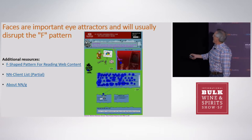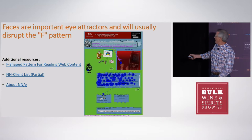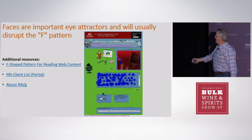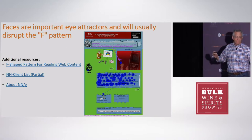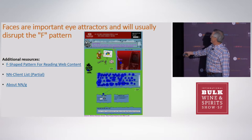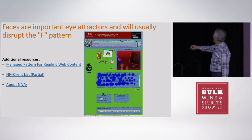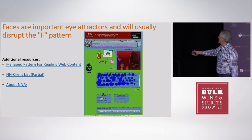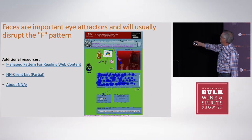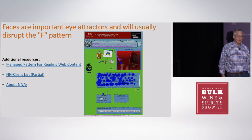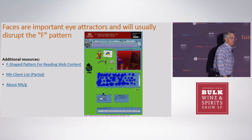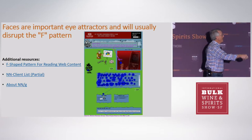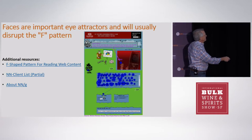Faces can interrupt the F pattern. In terms of eye tracking — that other was a heat map, this is eye tracking — the first place the eye went was on the face. And the thing that's really amazing is that face isn't even that prominent, but that's the first place it landed. Then it went down and read all of this. The key part: there's not a blue dot up here on the ad. Nobody looked at the ad — the eye didn't go there, but the eye did go to a face.